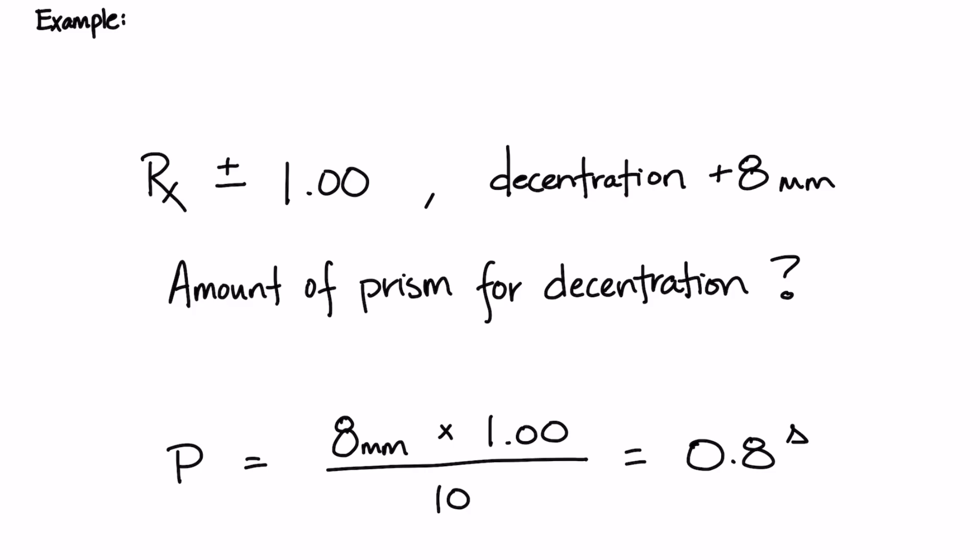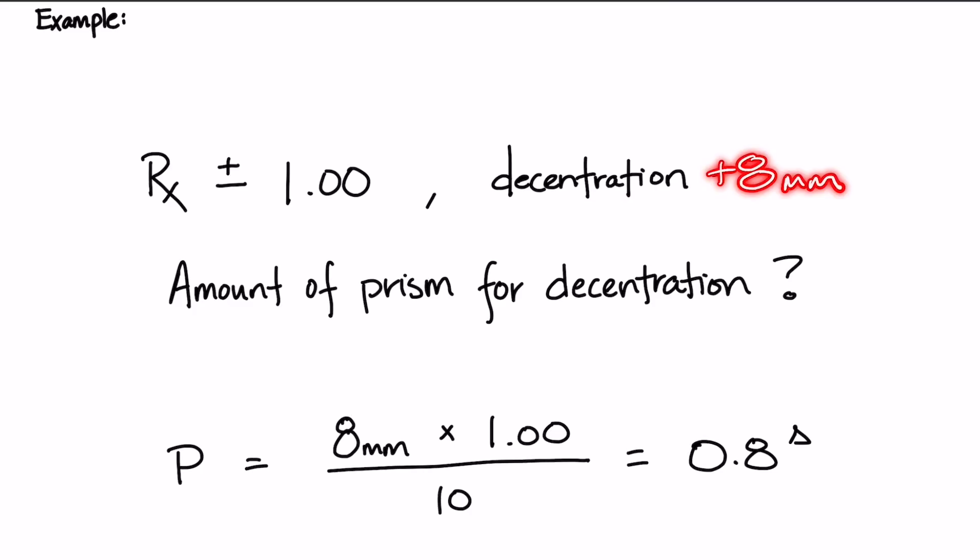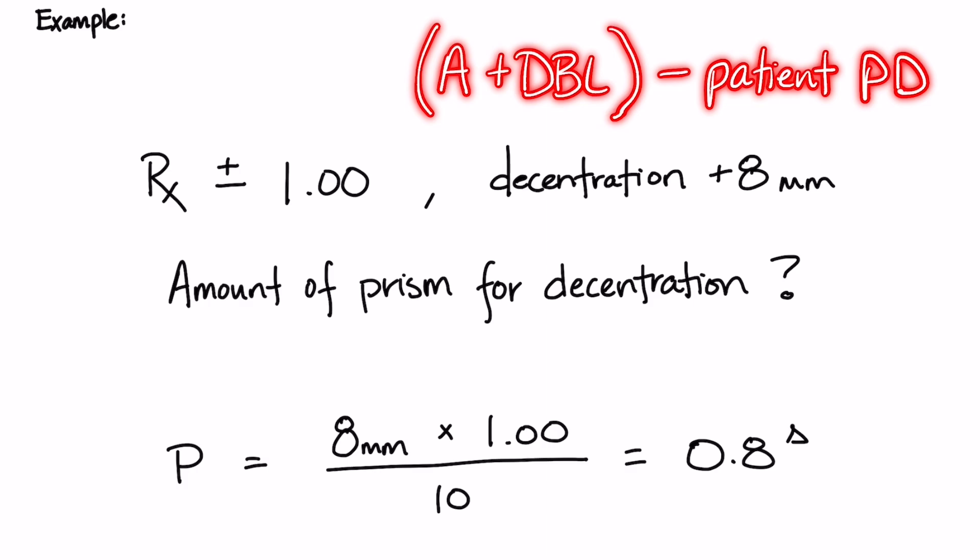Additionally, if the lens decentration had not been given to us, we would need to use decentration formulas to calculate what the decentration would be needed. So it's just an extra step in there.